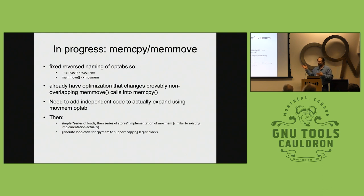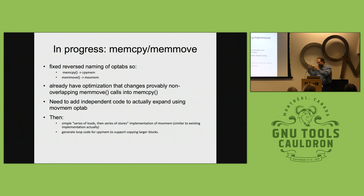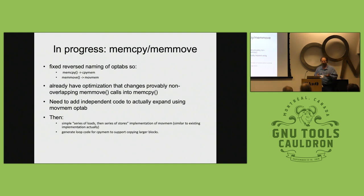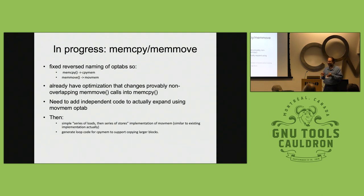We do have expansions for memcpy — the Power PC one is kind of simple, it loads a bunch of stuff into registers and stores it all to the destination. Ironically that would actually work for a memmove as opposed to a memcpy, even though it wasn't used for that. I hope I can get time this fall to get some of that into GCC 10.